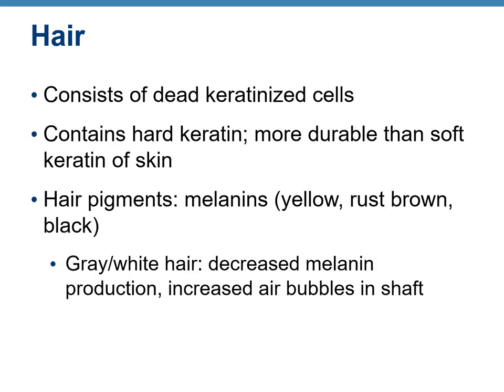Hair consists of dead keratinized cells containing hard keratin, which is more durable than the soft keratin of skin. Hair pigments are forms of melanin — yellow, rust, brown, or black. Gray and white hair results from decreased melanocyte activity and increased air bubbles in the hair shaft.